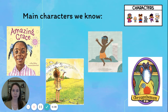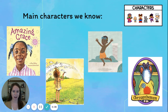Here are some main characters that we know in books that we've read this year. Grace is the main character in the book Amazing Grace. Elizabeth is the main character in the Paper Bag Princess. Jabari is the main character in Jabari Jumps. And Chrysanthemum is the main character in Chrysanthemum.